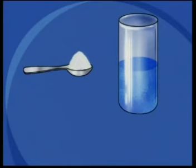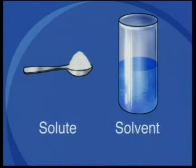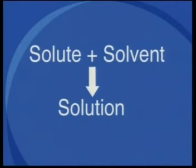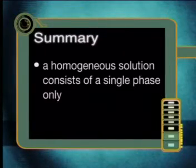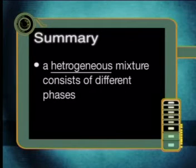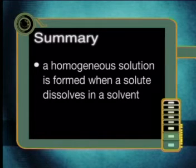For the rest of this lesson we will concentrate only on homogeneous solutions. Normally a solution is made up of two components: a solute and a solvent. In the salt and water experiment, the solute is the solid substance and the solvent is the liquid — the solute dissolves in the solvent to form a solution. The salt was the solute and the water was the solvent. To summarize: a homogeneous solution consists of a single phase only; a heterogeneous mixture consists of different phases; and a solution is formed when a solute dissolves in a solvent.